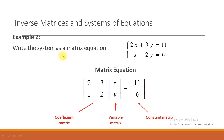Let us move to another example. We have a system of equations: 2x + 3y = 11 and x + 2y = 6. To find the solution using the inverse matrix, write the system in matrix form. The coefficient matrix is [2, 3; 1, 2], the variable matrix is [x; y], and the constant matrix has entries 11 and 6.